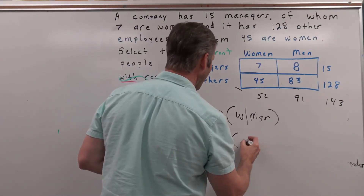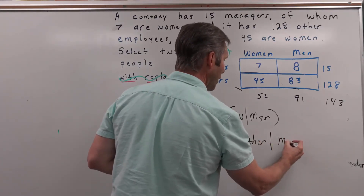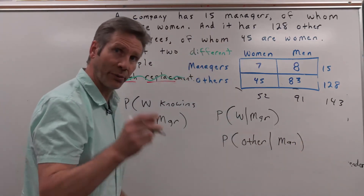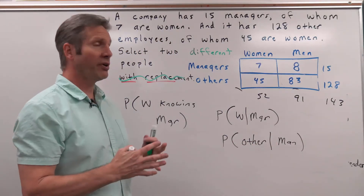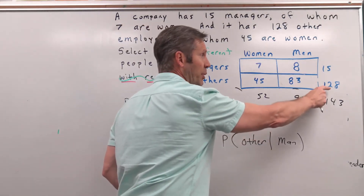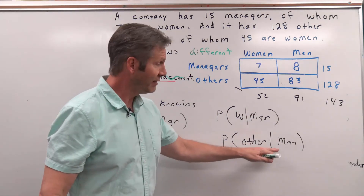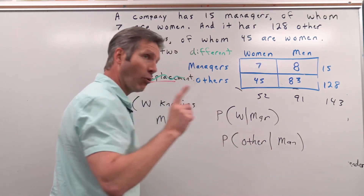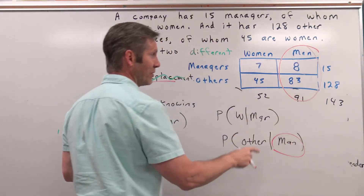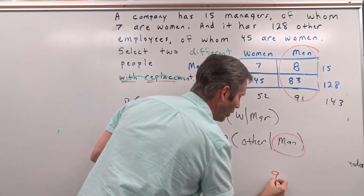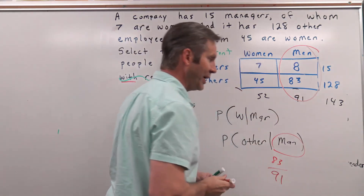What's the probability that we get an other employee given that the person selected was a man? We're selecting one person who must satisfy both characteristics. Without additional information it would be 128 out of 143, but we're told the person was a man. So we shrink the sample space down to the 91 men. Out of those 91, 83 are other employees, so the probability is 83 out of 91.